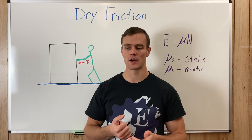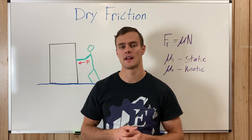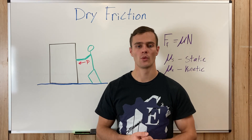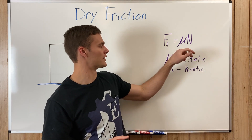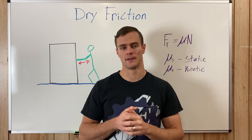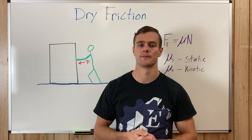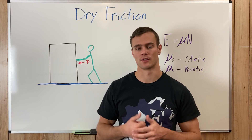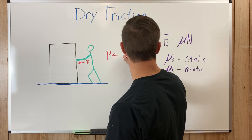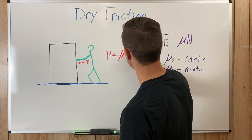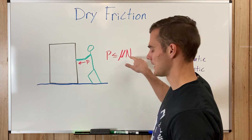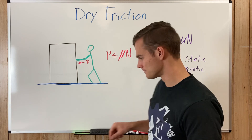When solving problems asking for the minimum force needed to start moving an object, find the normal force and multiply it by the coefficient of static friction — that is the force required to start movement. If the applied force P is less than or equal to mu times the normal force, the object won't move. But once P becomes greater than mu times N, it will start moving. That's how friction works.